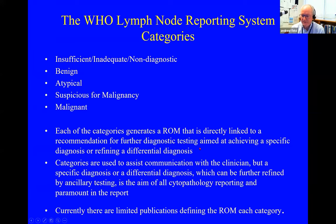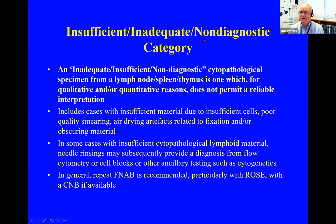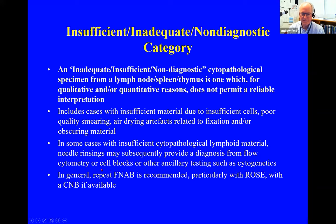There are limited publications on the risk and links of each category because in many cases these are brand new reporting systems. The insufficient/inadequate/non-diagnostic category from a lymph node, spleen, or thymus is one used for qualitative and/or quantitative reasons — it does not permit a reliable interpretation. This includes insufficient cells, poor quality smearing, air-drying artifacts, and obscuring material. In some cases with insufficient lymphoid material, needle rinsings may subsequently provide a diagnosis through flow cytometry, cell blocks, or other ancillary testing such as cytogenetics, allowing us to step out of the insufficient category.